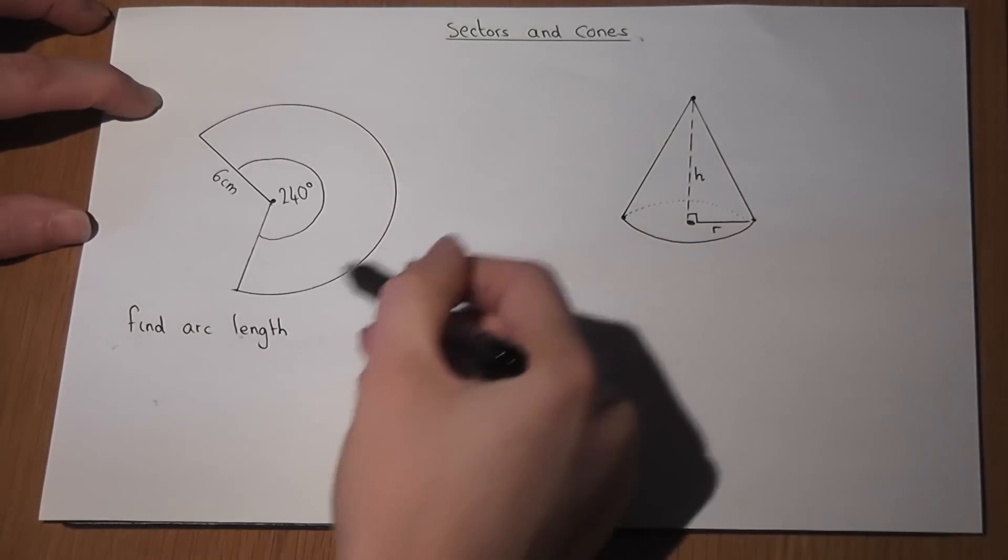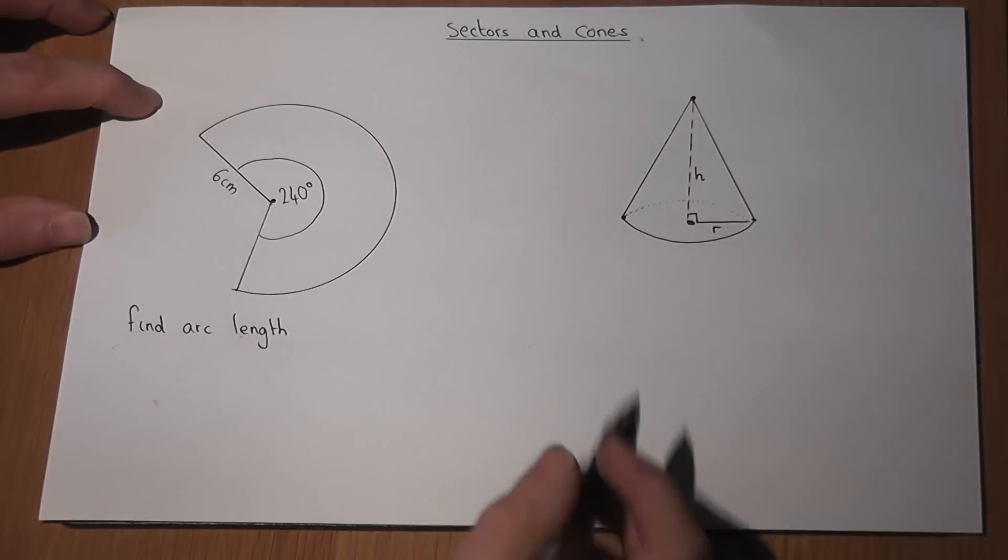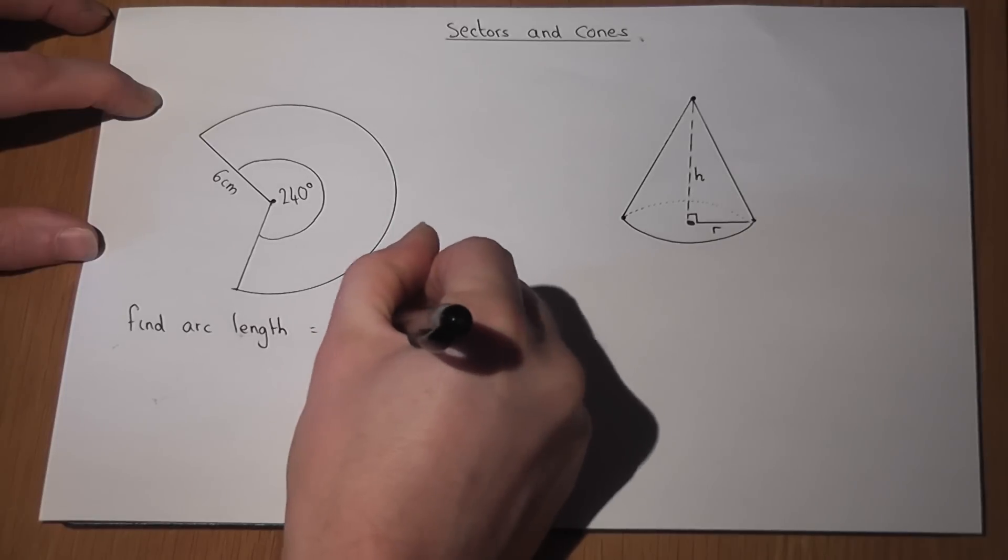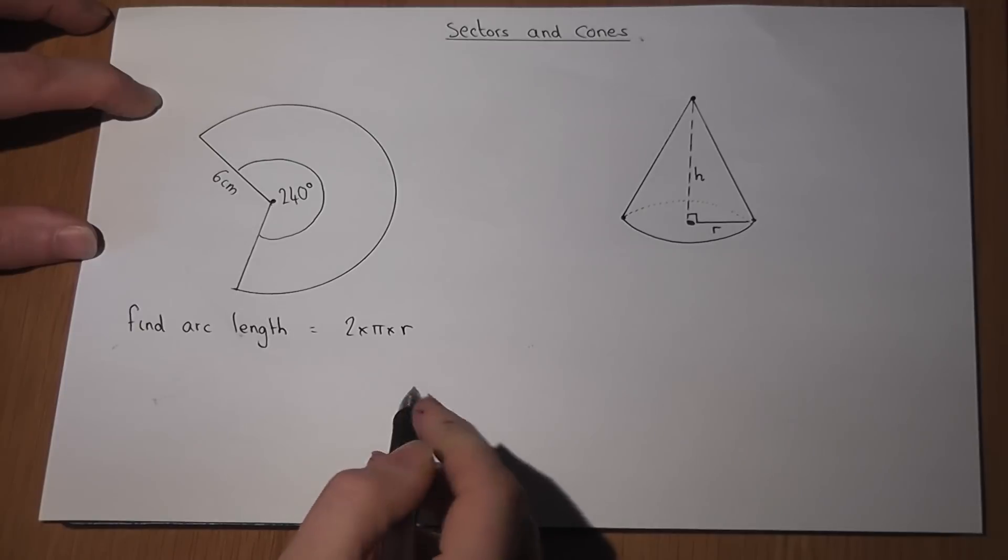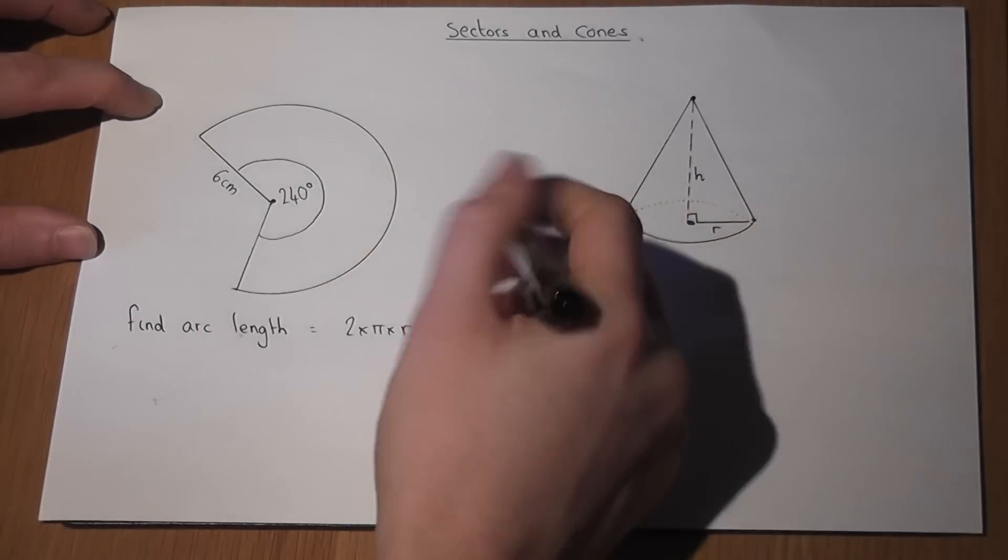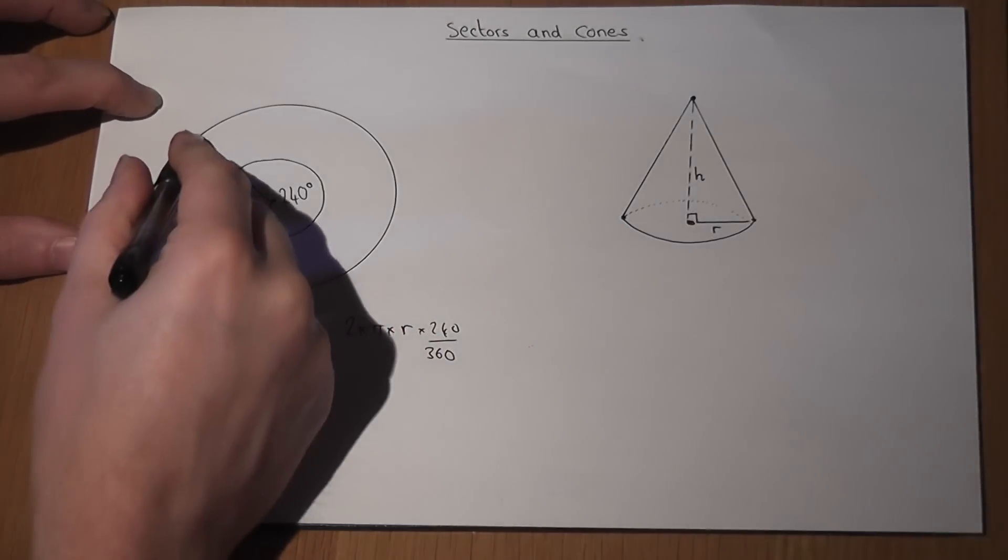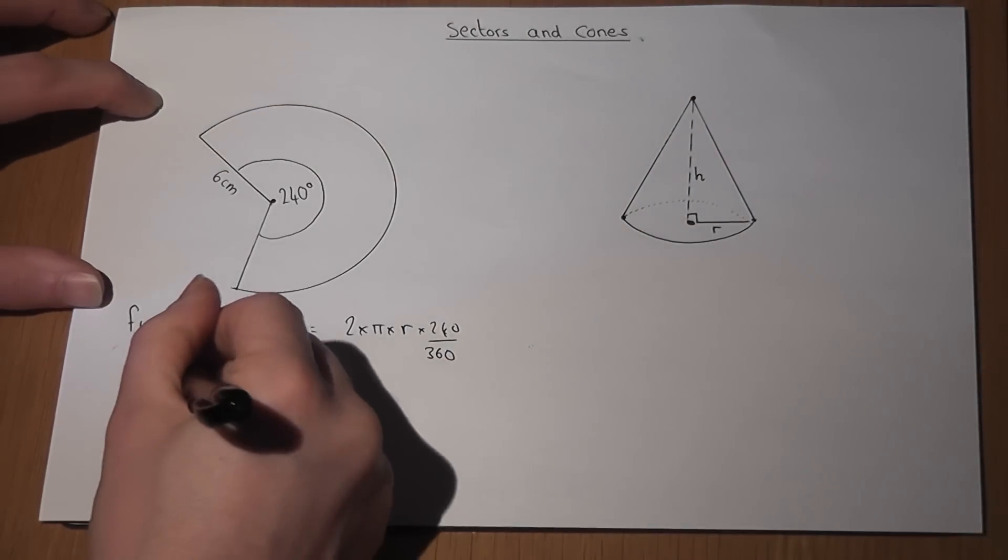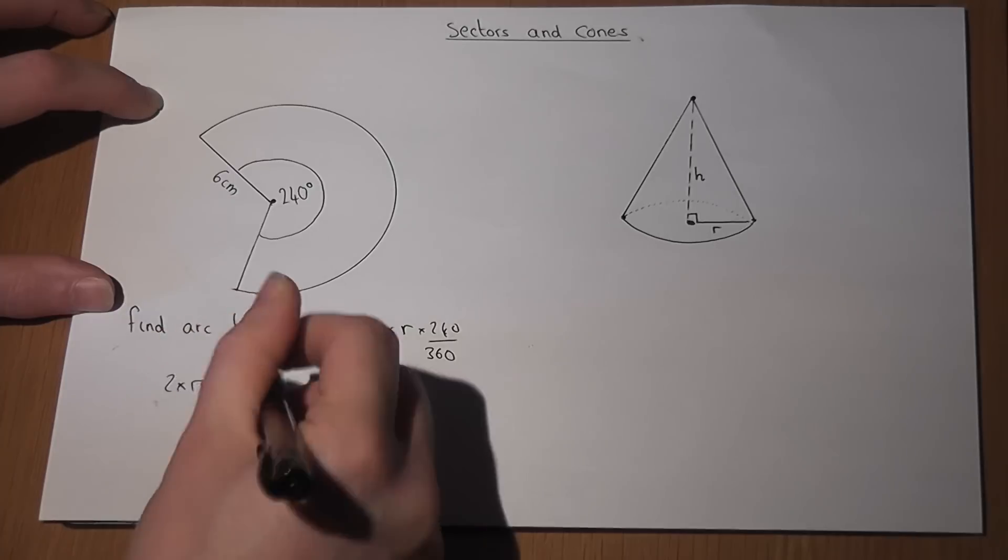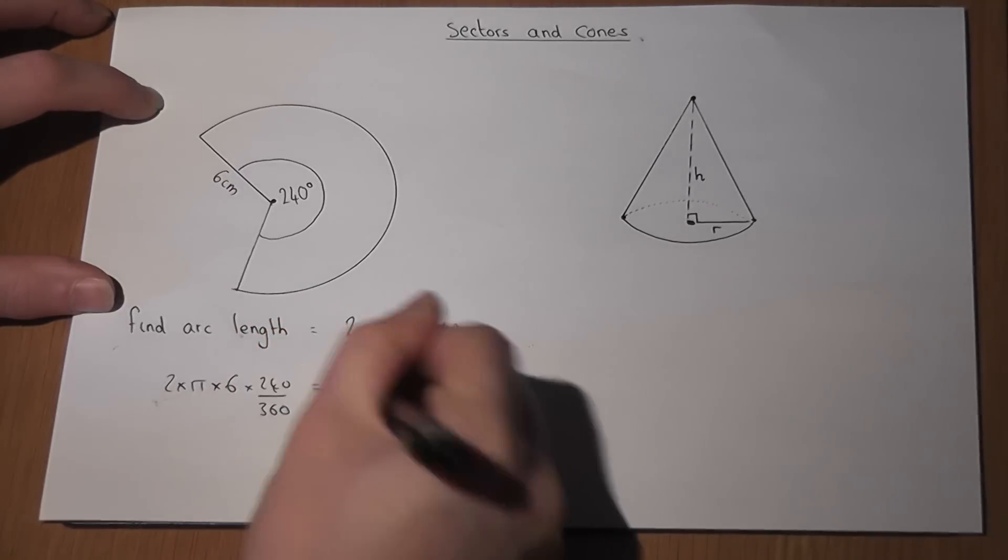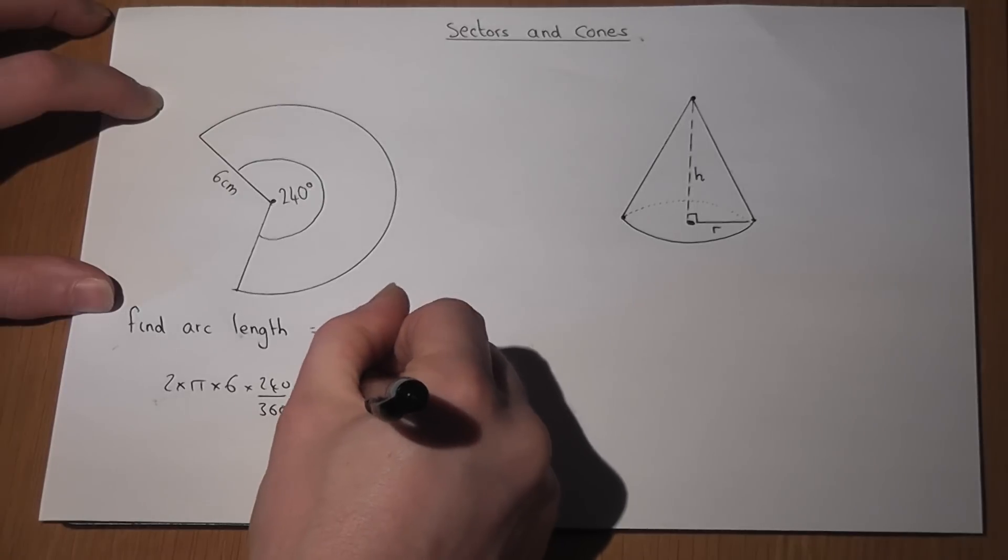The full circumference, were it a full circle, would be 2 times pi times r, but this is a fraction of a full circle, the fraction being 240 over 360. So the arc length is 2 times pi times 6 times 240 over 360, which ends up being 8 pi.